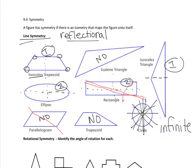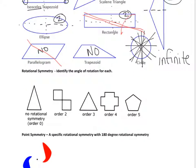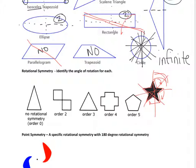Rotational symmetry is when you can take a figure and rotate it onto itself. If you had this star, you could turn it and it would look the same. I'd calculate the angle as 360 divided by 5 — because it has five points — which gives 72 degrees. Every 72 degrees you could turn it and it would map onto itself.